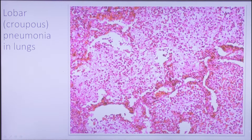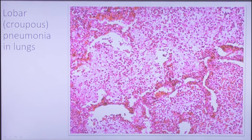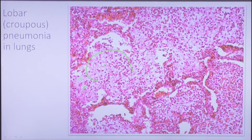Here is lobar pneumonia. All alveoli are filled with dense exudate in which we see many neutrophils and a lot of fibrin, which looks like thin threads. That is why we classify this type of inflammation as fibrinous.